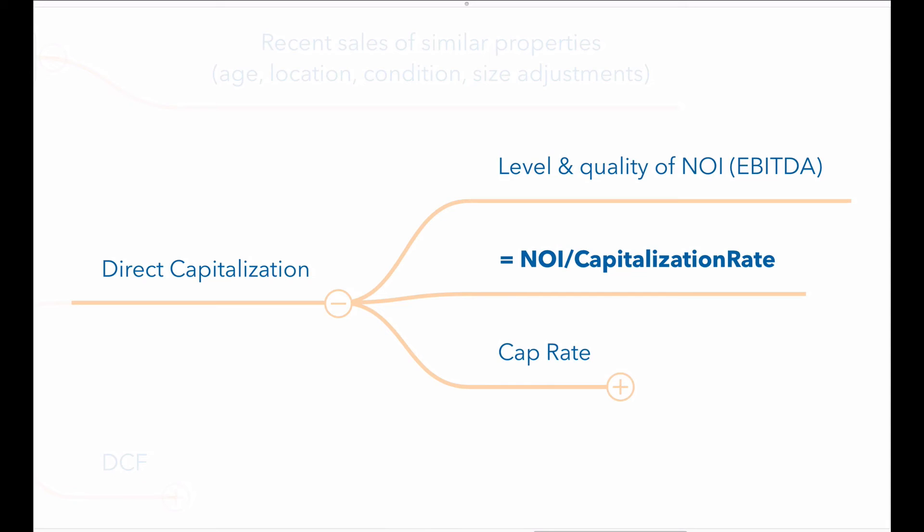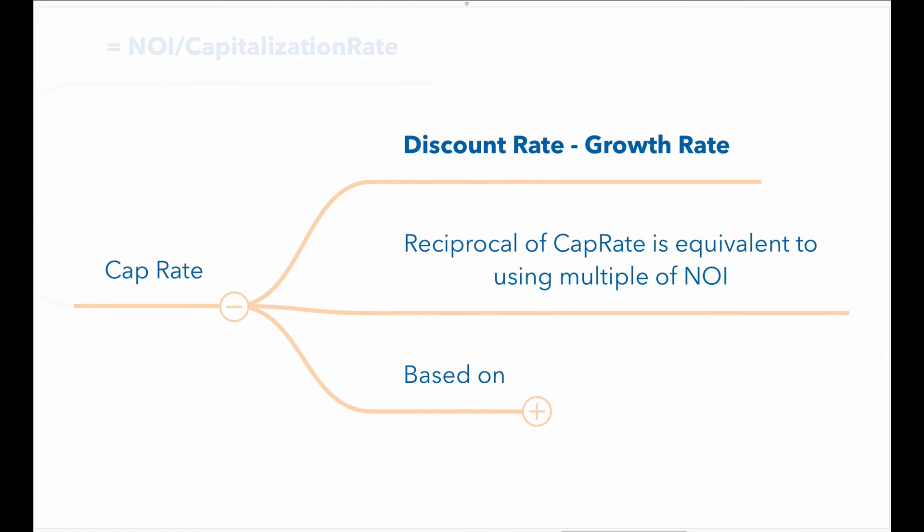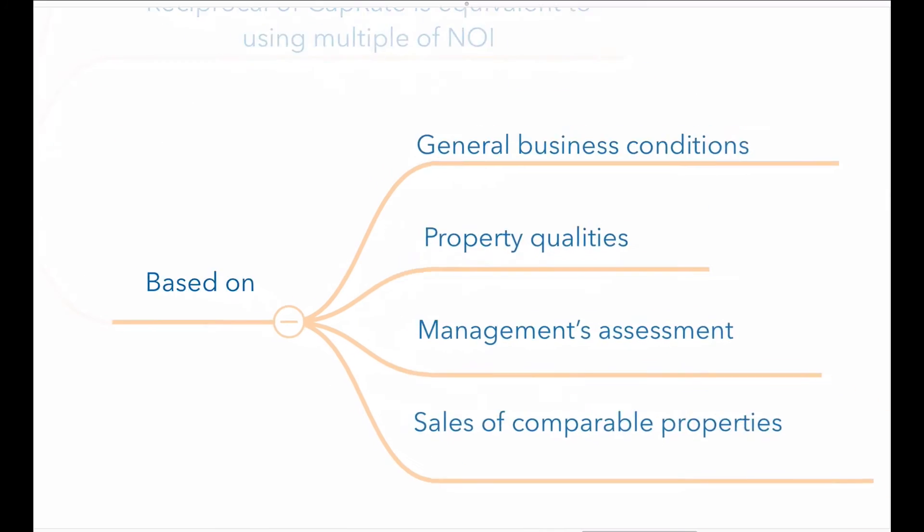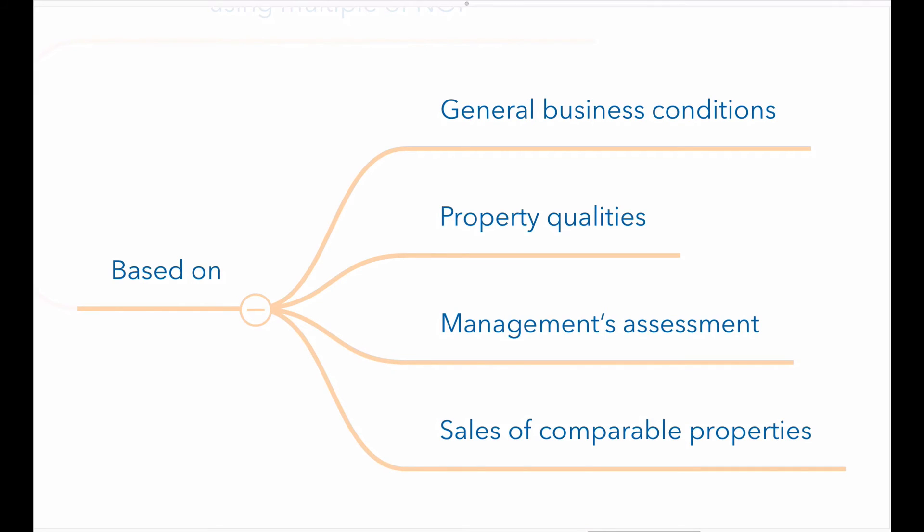In the direct capitalization method, the expected annual NOI is divided by a capitalization rate or cap rate to estimate the value of the property. Cap rate is a discount rate minus a growth rate. The reciprocal of the cap rate is a multiple that can be applied to the NOI. The cap rate is estimated for a given property based on general business conditions, the qualities of the property, management's assessment, and the sales of comparable properties.